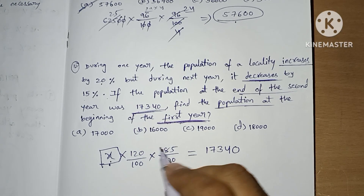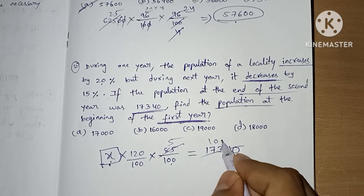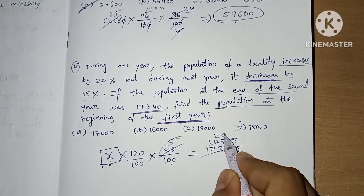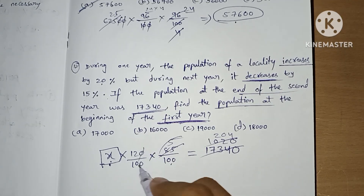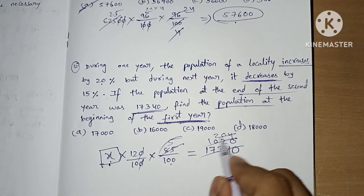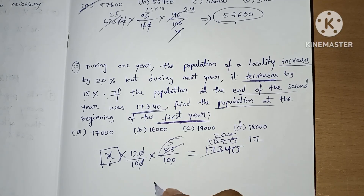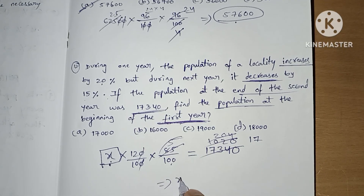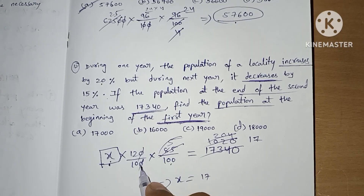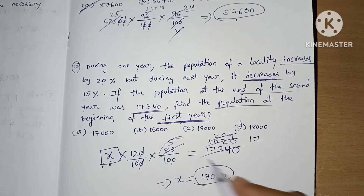So we calculate x by working through: 17 × 5 = 85, 2 × 0 = 0, cancelling the 10s, we get x = 17 × 1000 = 17,000. The answer is 17,000 — option A.